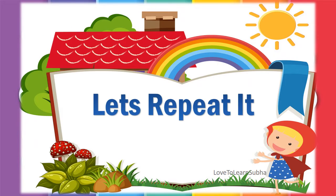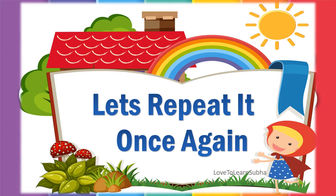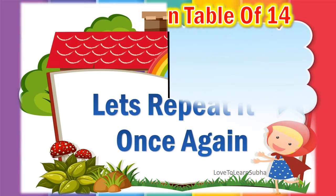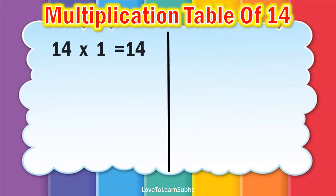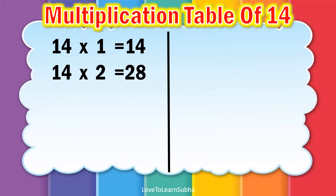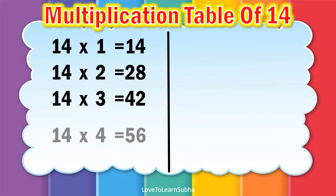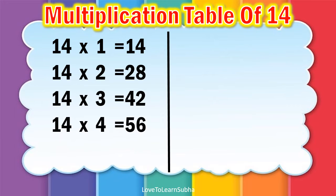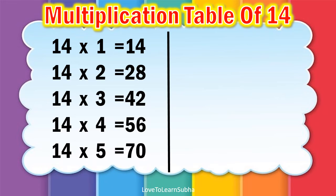Now, let's repeat it once again. 14 ones are 14, 14 twos are 28, 14 threes are 42, 14 fours are 56, 14 fives are 70.